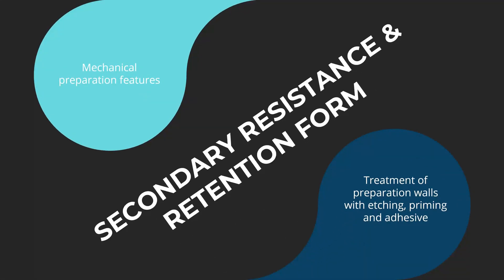Before going into the presentation, we should understand why we have to provide a secondary resistance and retention form. In the initial stage of tooth preparation, we have already provided the primary resistance and retention form. But in the secondary stage, we have removed more decay, or we may have removed old existing restorative material, or we may have applied a pulp protective base. All of these things could have compromised the primary resistance and retention features already provided.